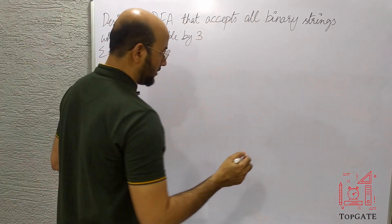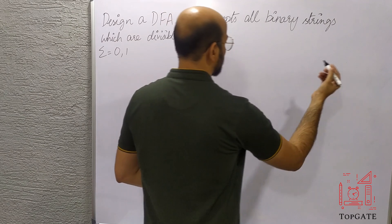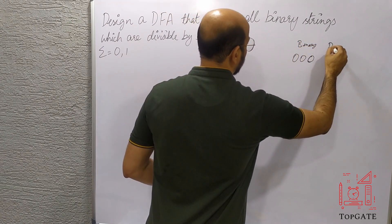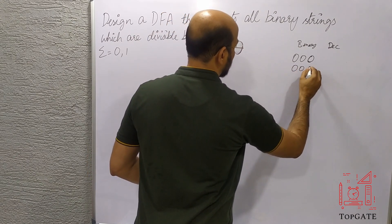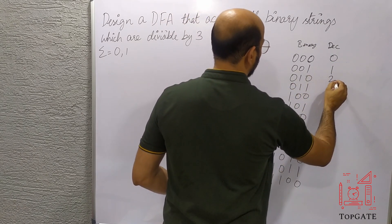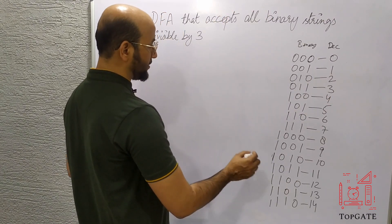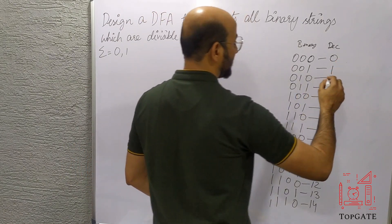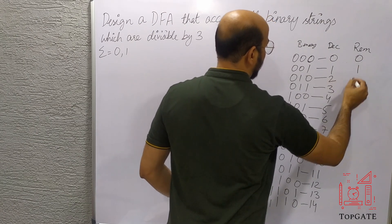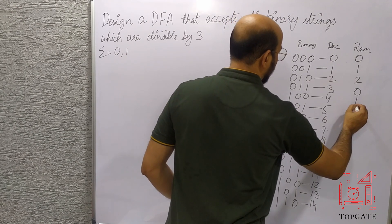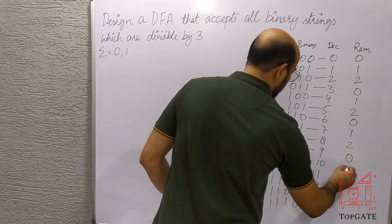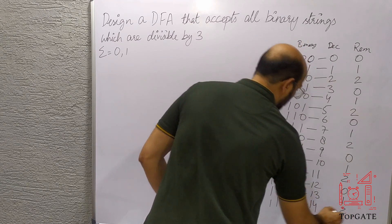Let us understand the binary system and the corresponding decimal numbers. In binary we have: 000, 001, 010, 011, 100, 101 and so on, which in decimal are 0, 1, 2, 3, 4, 5 and so on. When we divide these numbers by 3, the remainders cycle as: 0, 1, 2, 0, 1, 2, 0, 1, 2 and so on.